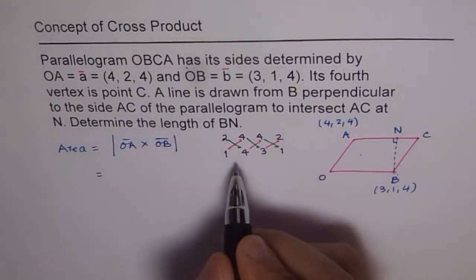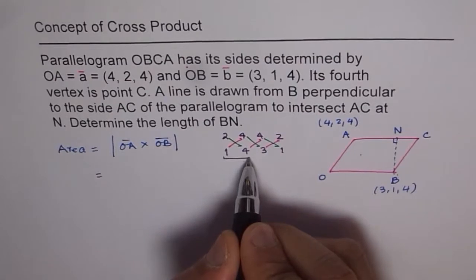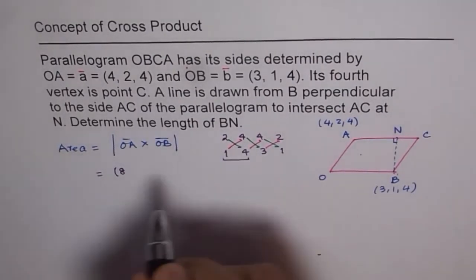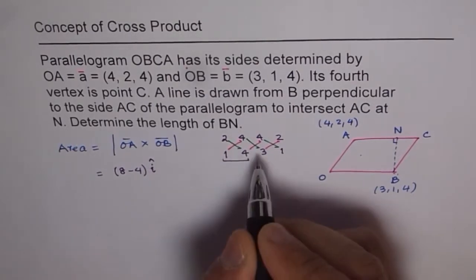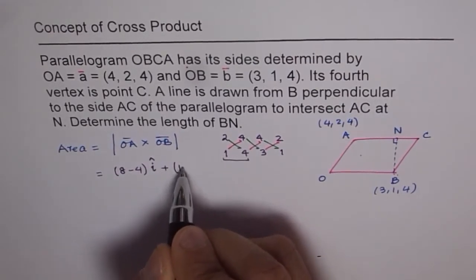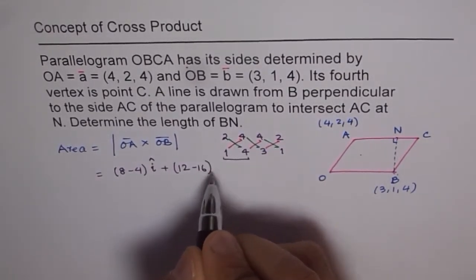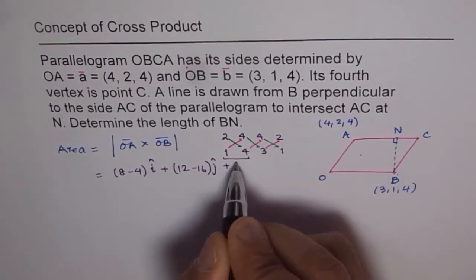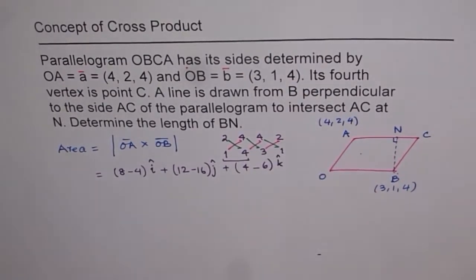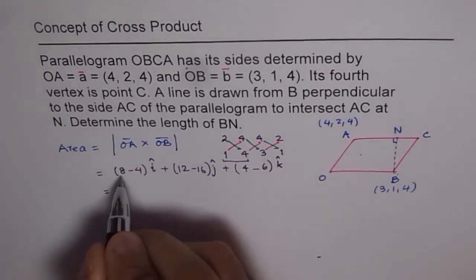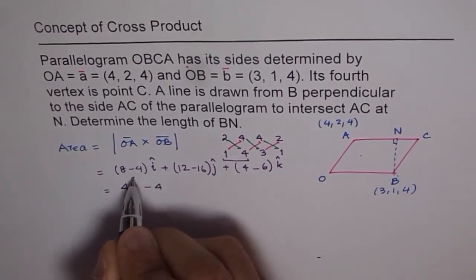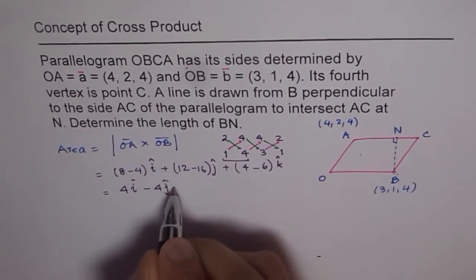So this could be written as I component. This set will form I component for us. So 4 times 2 is 8, so we have (8 - 4). And this is our I component. And the J component is 4 times 3 is 12, plus 12 and minus 4 times 4 is 16. That is the J component. And then the K component for us is 4 times 1 is 4, minus 3 times 2 is 6. And that is the K component of our vector.